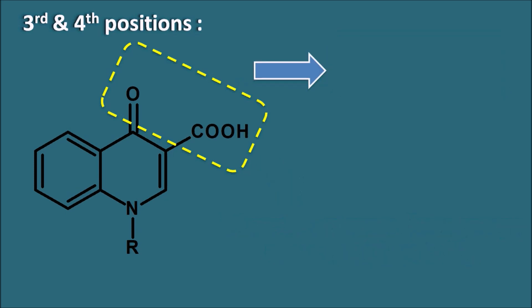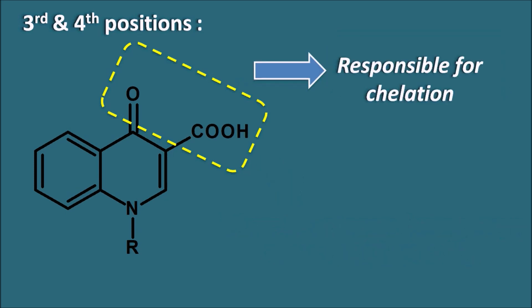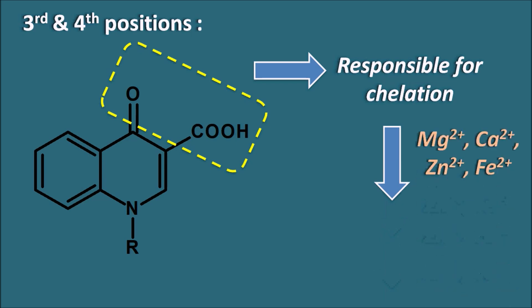The groups at the third and fourth positions are also responsible for chelation with divalent and trivalent cations. Most fluoroquinolones can chelate metals like magnesium, calcium, zinc, and iron, forming insoluble complexes that reduce absorption and bioavailability. That is why when fluoroquinolones are given with antacids, milk preparations, or iron and zinc preparations, absorption is reduced.